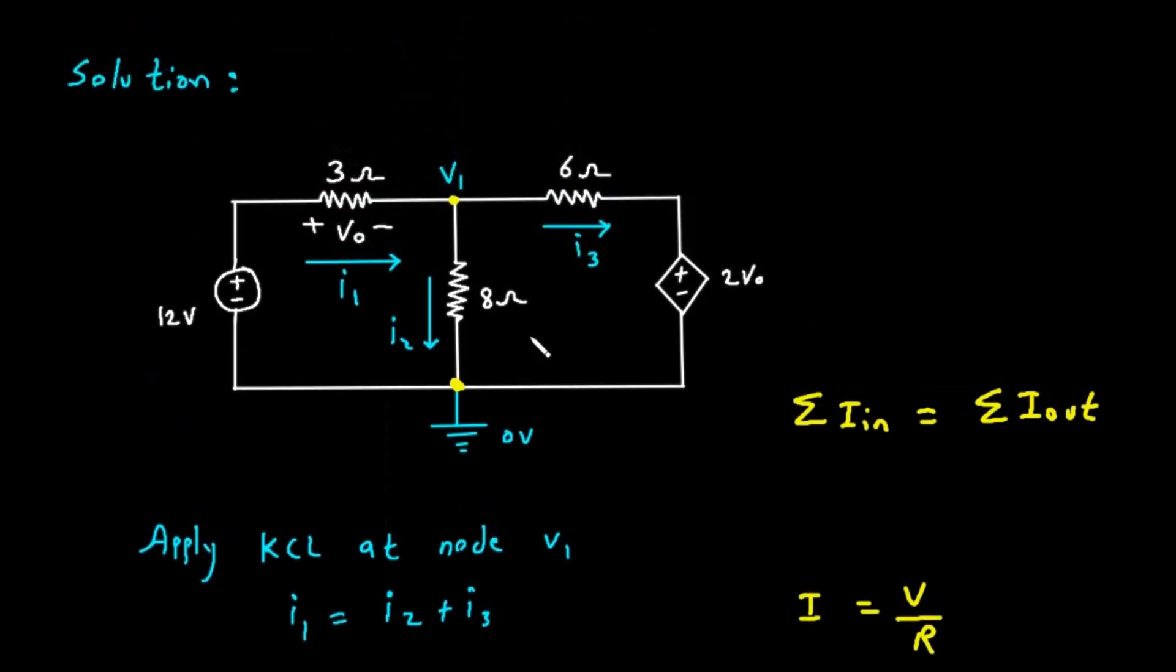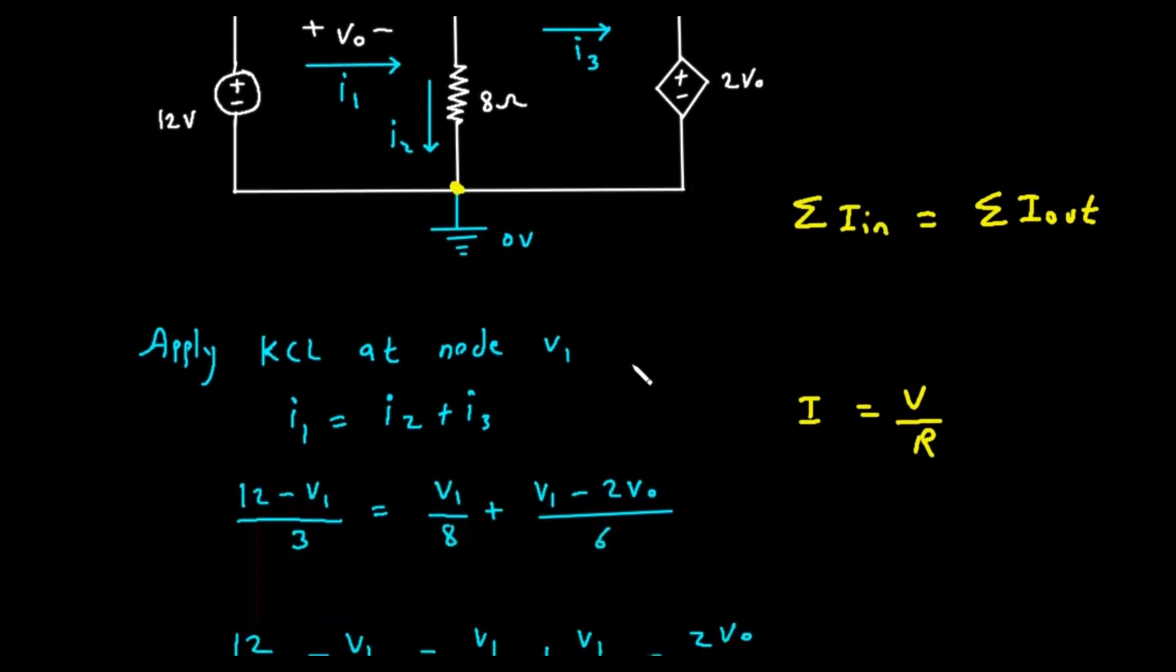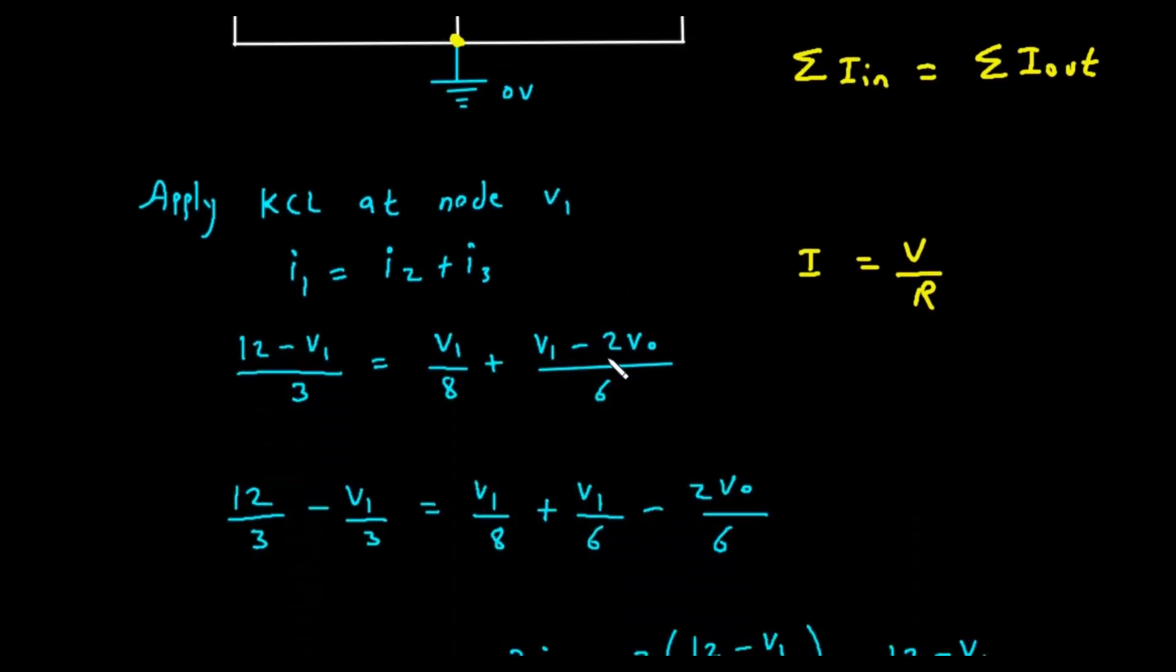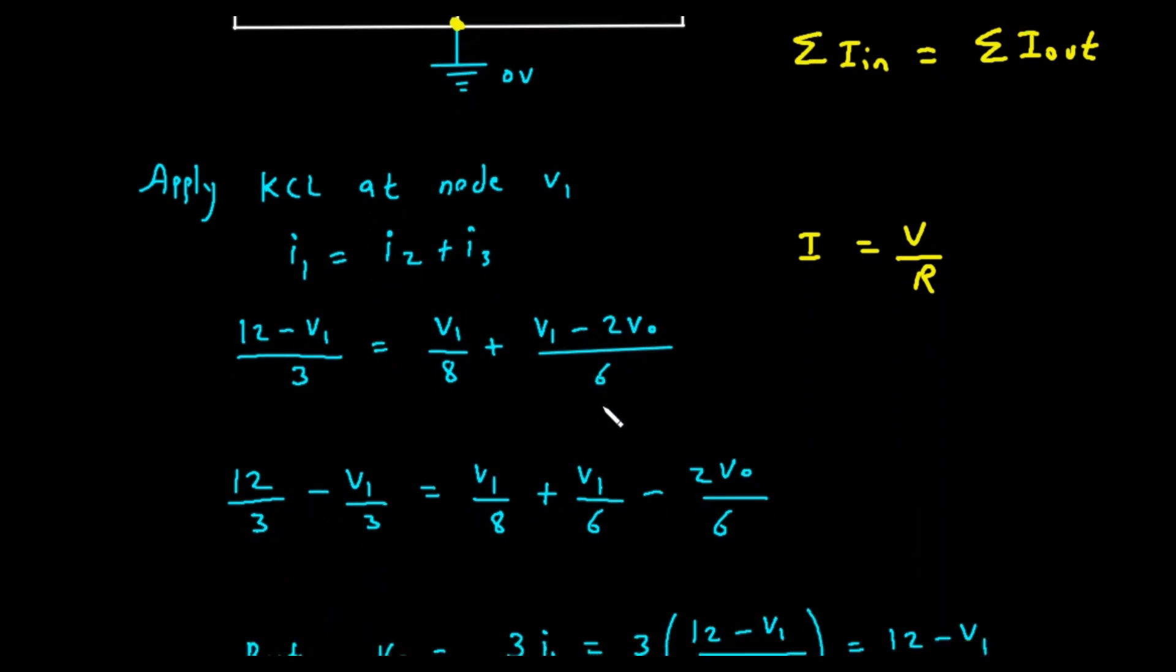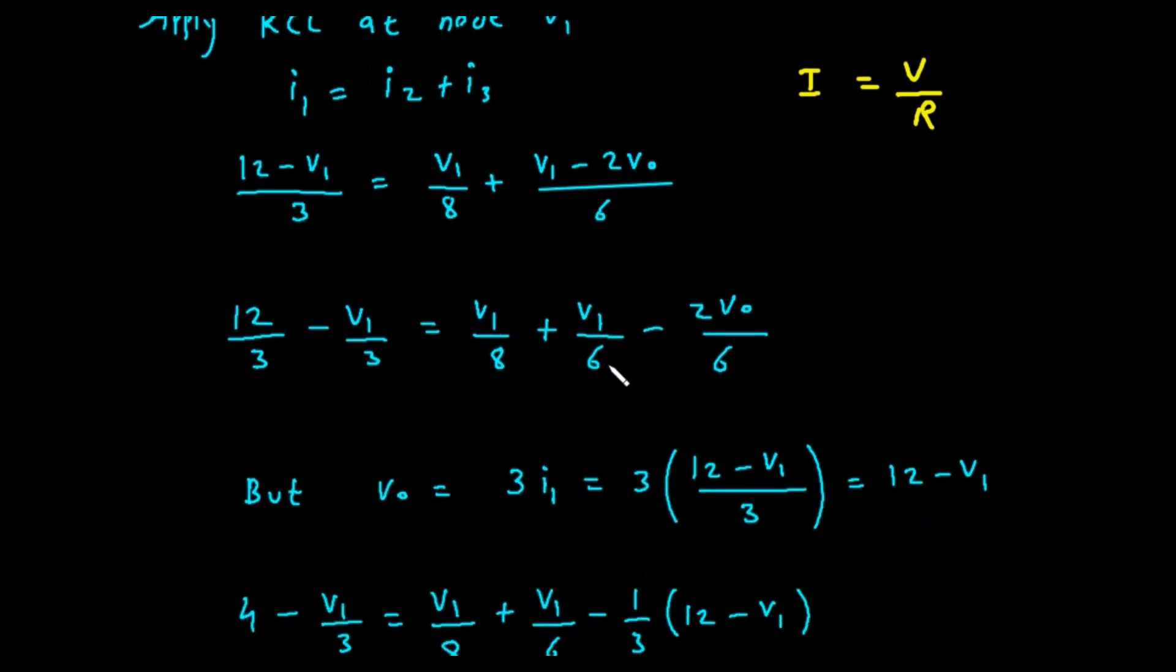For I sub 1, the voltage difference across the 3 ohm resistor is 12 minus V sub 1. So I sub 1 is equal to 12 minus V sub 1 divided by 3. For I sub 2, the voltage difference across the 8 ohm resistor is V sub 1 minus 0, which is just V sub 1. So I sub 2 is equal to V sub 1 divided by 8. For I sub 3, the voltage difference across the 6 ohm resistor is V sub 1 minus the voltage on the other side. That voltage is set by the dependent source, which is 2 times V0.